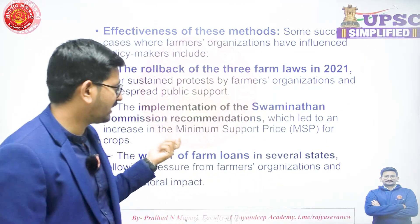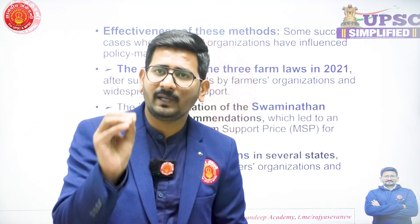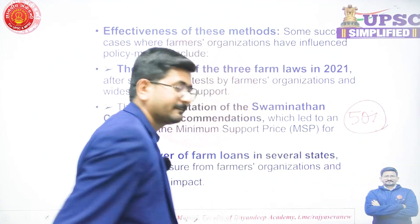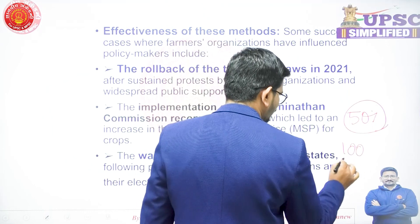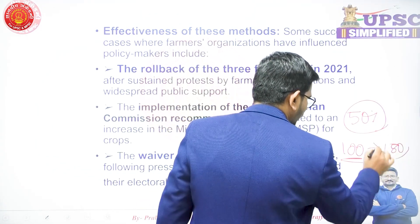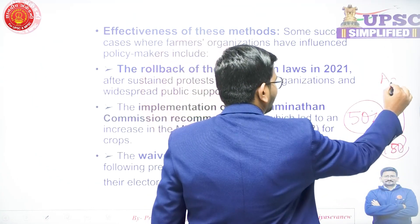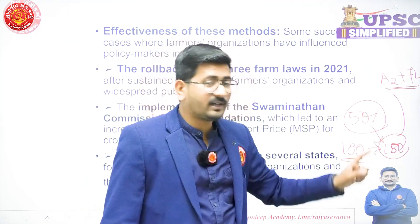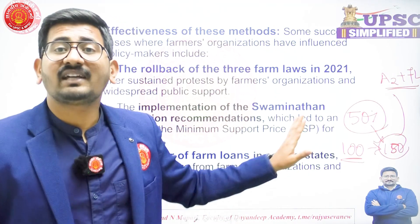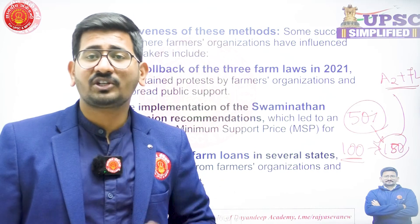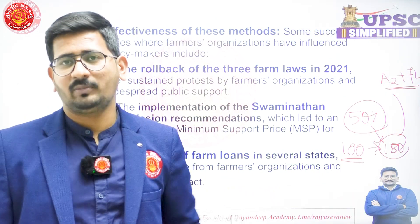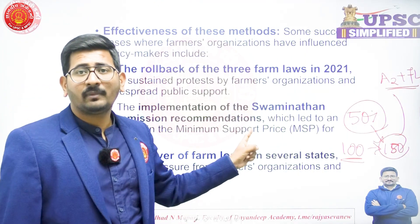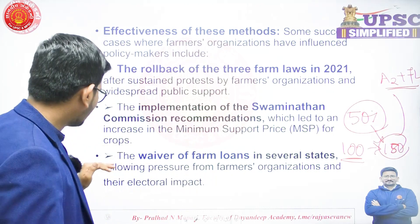The second example is the Swaminathan Committee recommendations on MSP. The committee recommended that there should be a minimum 50% profit — meaning if the production cost of any agricultural produce is 100 rupees, the MSP should be at least 150 rupees. These recommendations were accepted by the Union Government largely because of repeated demonstrations whose core demand was implementation of the Swaminathan policy. Even Dr. Anna Hazare during past agricultural protests raised the implementation of Swaminathan Committee recommendations as a key demand.